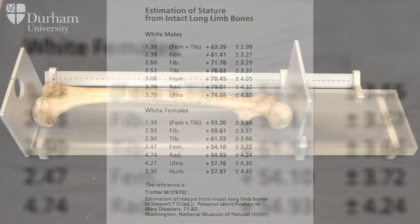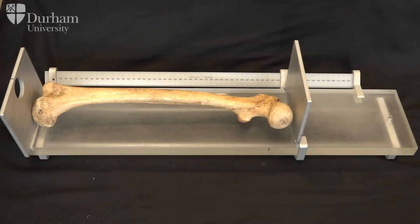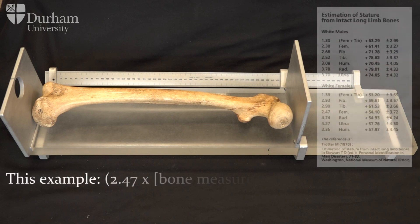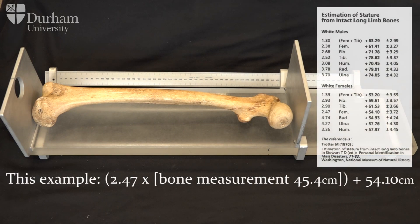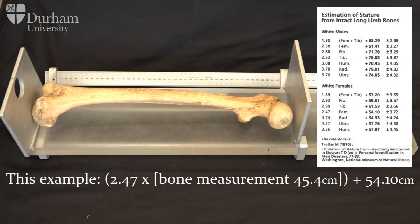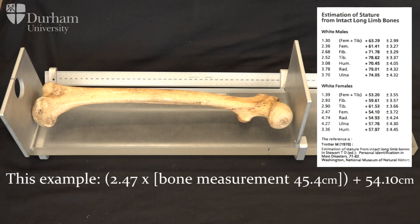Here we have a right femur from a female individual, so we measure it with our osteometric board to get the maximum length, and then we place it within our regression equation. This will then give us the height of the individual.